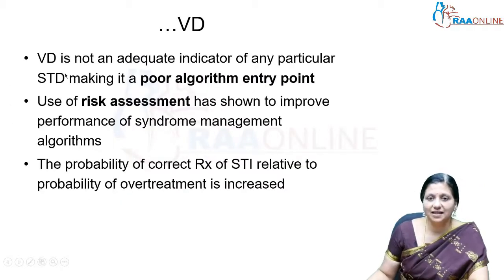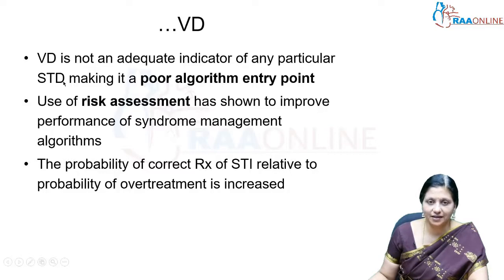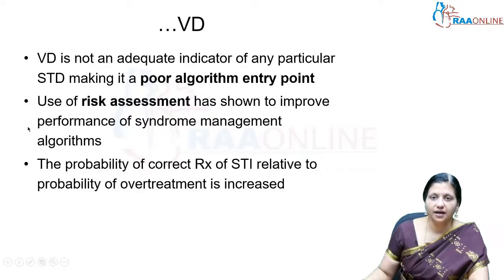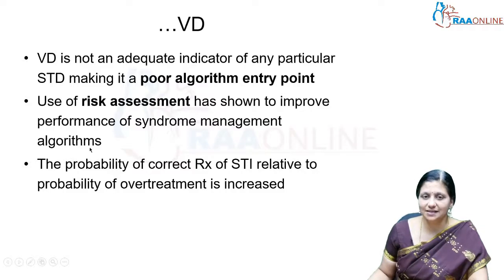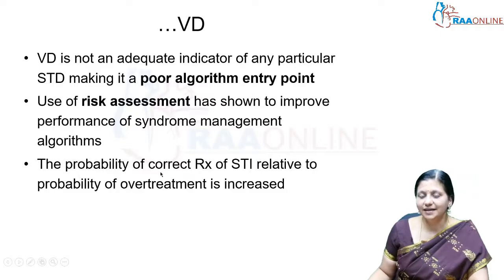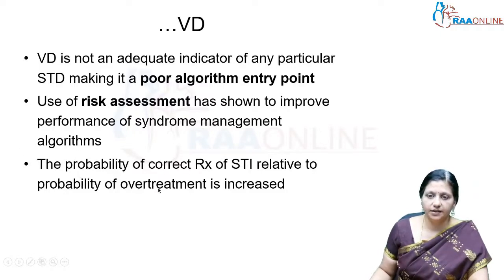Vaginal discharge is not an adequate indicator of any particular sexually transmitted disease and makes it a poor algorithm entry point. In the WHO algorithm for syndromic management, risk assessment is used to improve the performance of syndromic management algorithms, increasing the probability that correct treatment of an STI will be given relative to the probability of over-treatment.